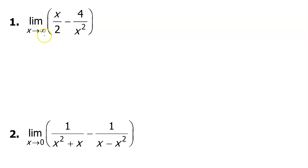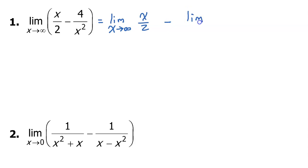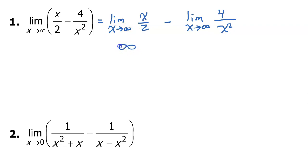Consider problem number one. We have the limit of this difference. We can separate this into two separate limits: the limit as x approaches infinity of x over 2, minus the limit as x approaches infinity of 4 over x squared. As x approaches infinity, the first term's numerator is getting bigger and bigger, and the denominator is not changing. So this term is going to get bigger and bigger — it's approaching infinity.